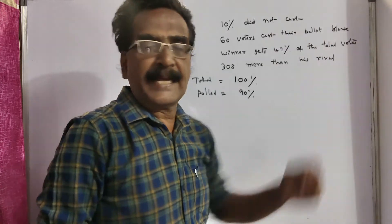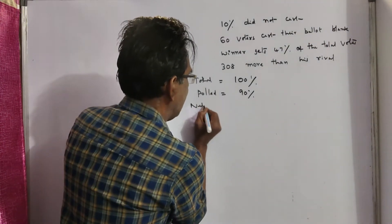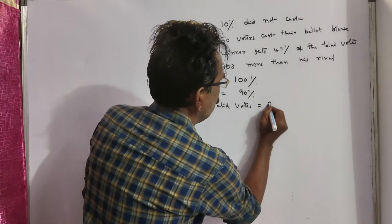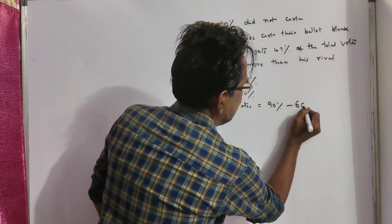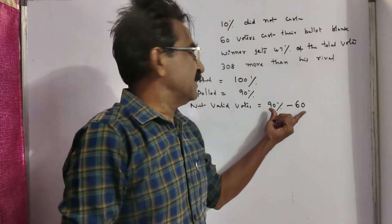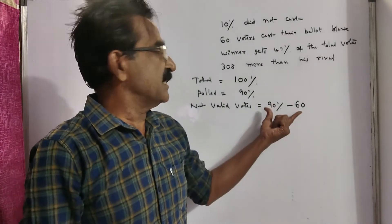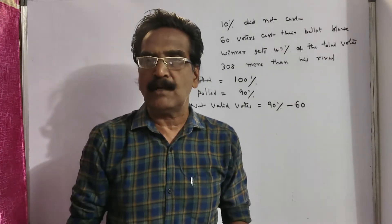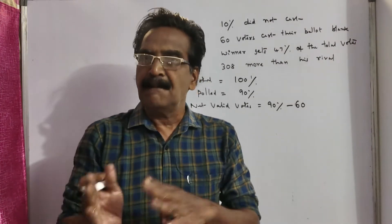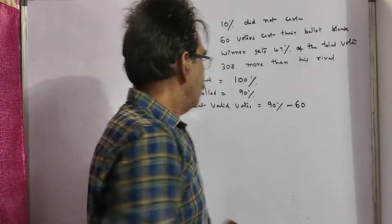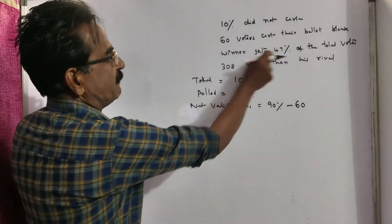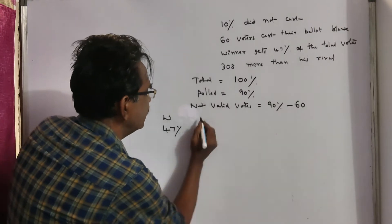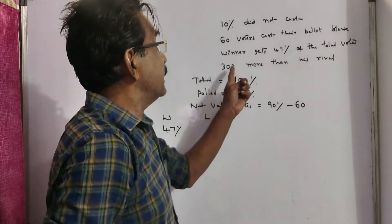60 voters cast their ballot blank, so net valid votes equals 90 percent minus 60. This net valid votes must always be equal to votes polled by the winning candidate plus votes polled by the losing candidate. The winning candidate gets 47 percent of the total votes.